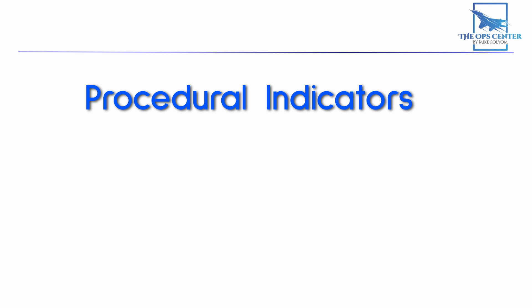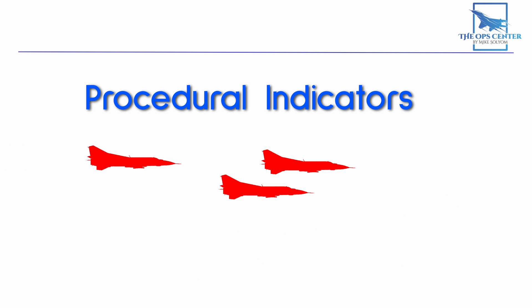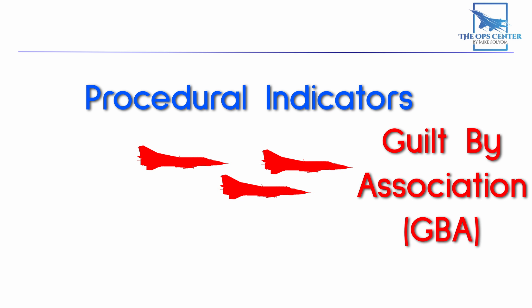Lastly, we have procedural indicators. This simply means making an identification based on a target's activity. So if a plane took off from a known enemy airfield, we can make an ID based on its point of origin. Or if an unknown contact joins a formation of known hostile aircraft, then it is ID'd based on guilt by association.